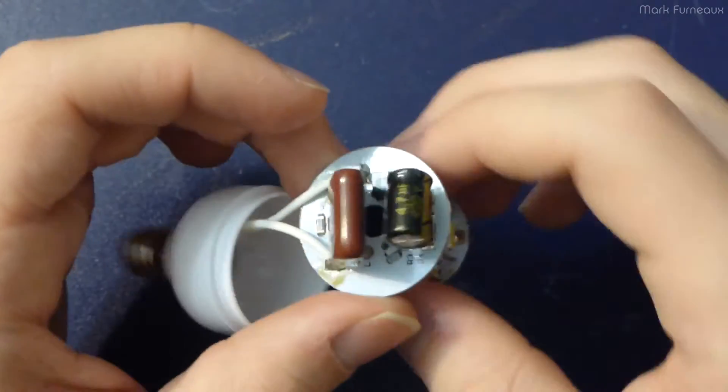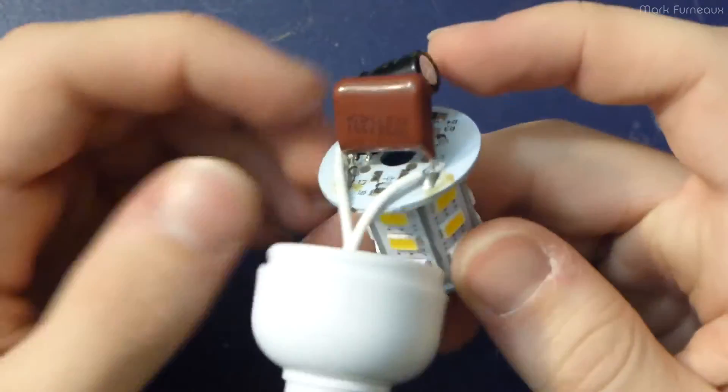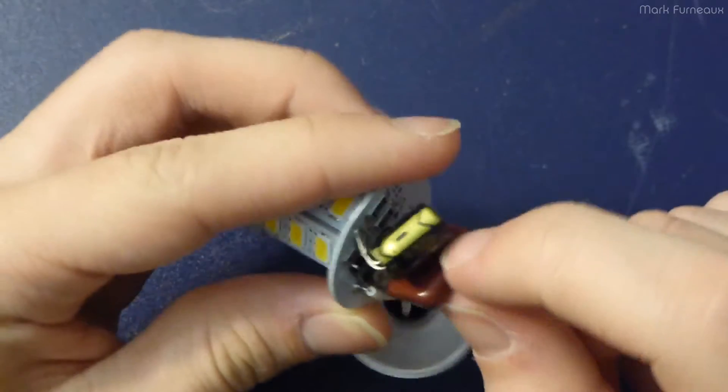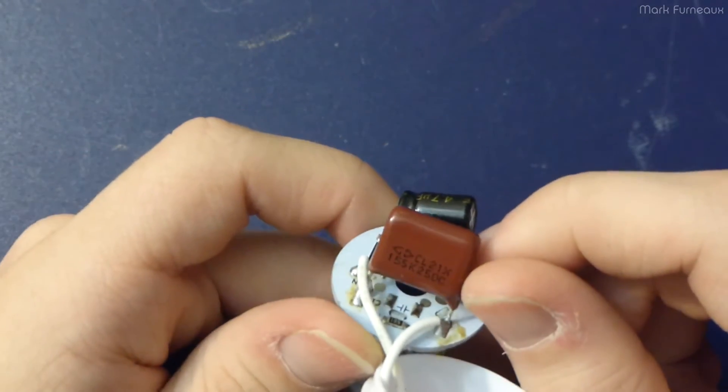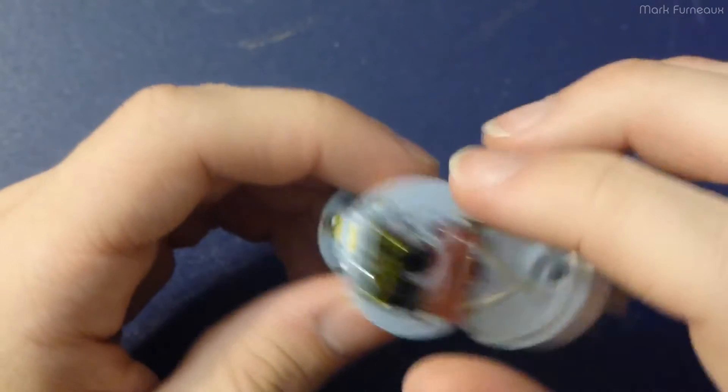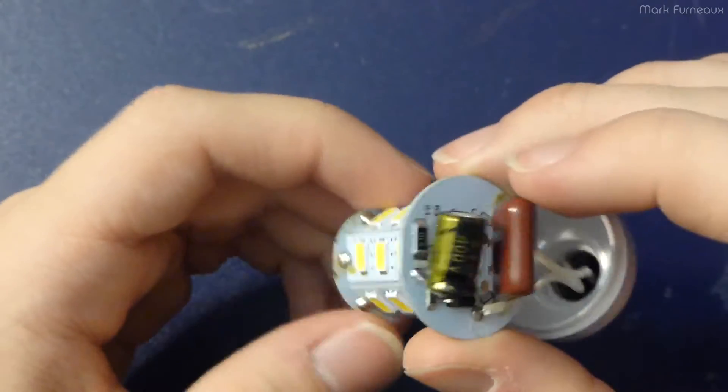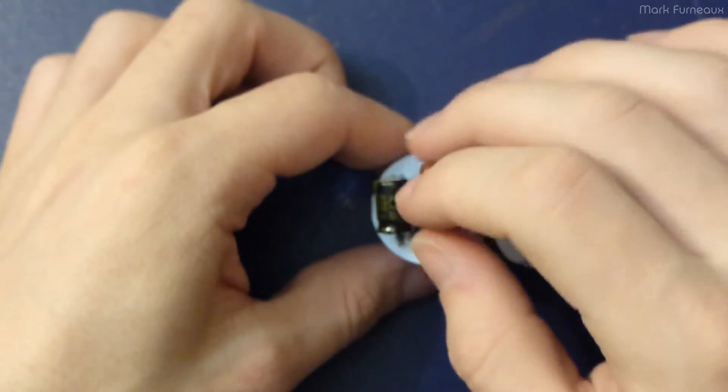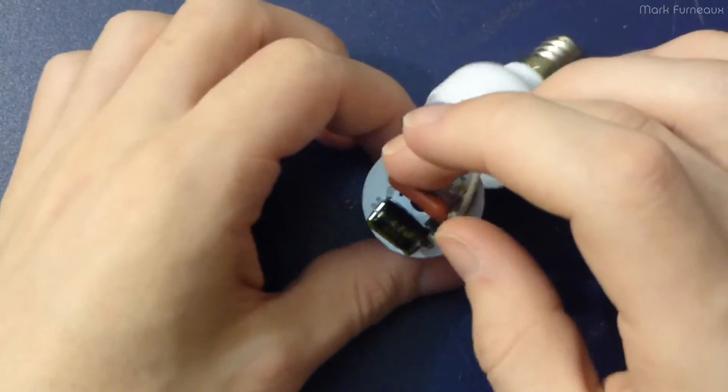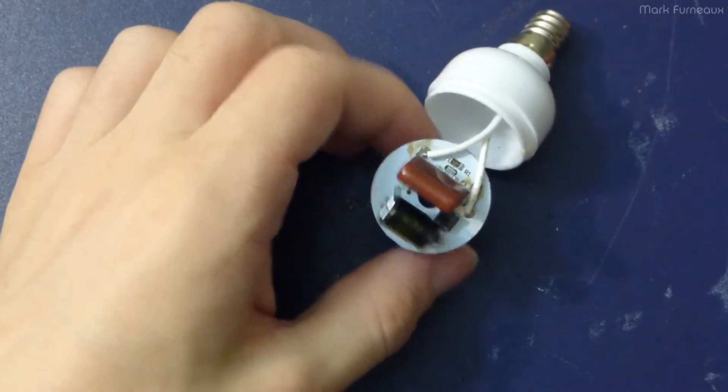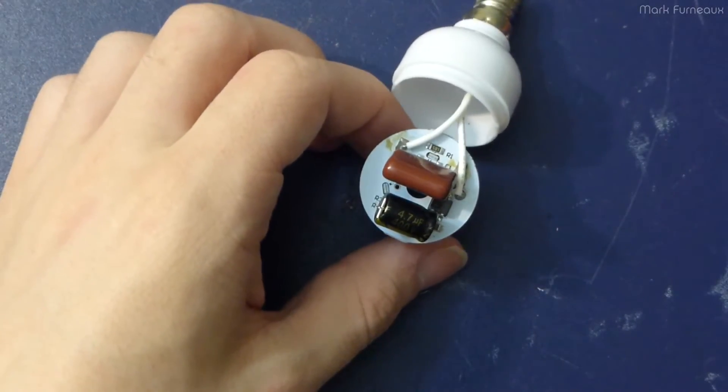They're very simple. So the fact that the LEDs glow tells me that there's at least something getting to them. And I wonder if it's this cap. I wonder if this cap has gone open and it's just sort of coupling just a little tiny bit of current in. Unfortunately I don't have a cap tester that goes down this low. I have ordered one but it has yet to arrive.